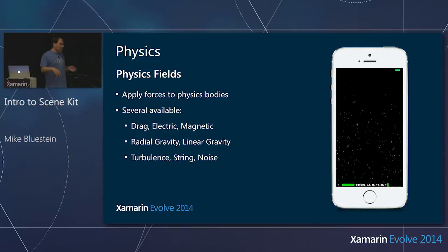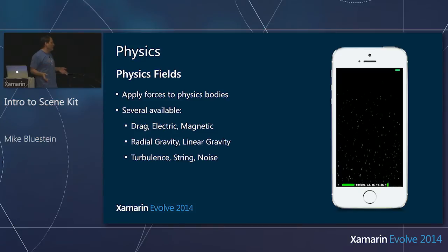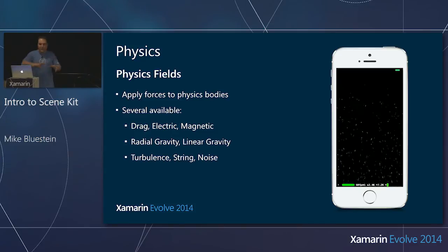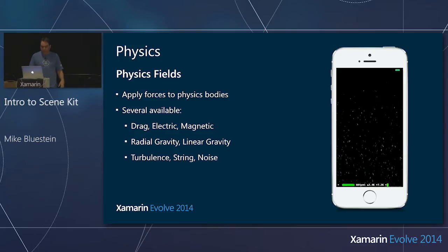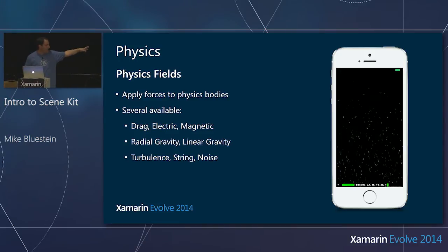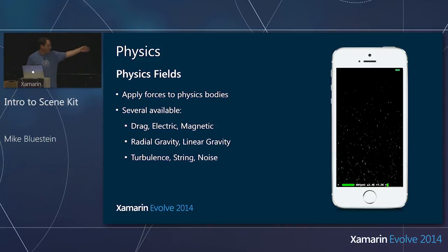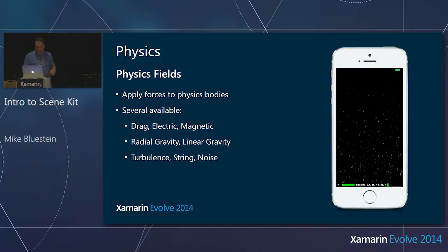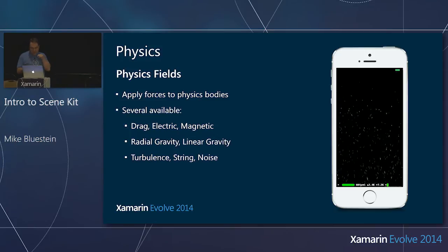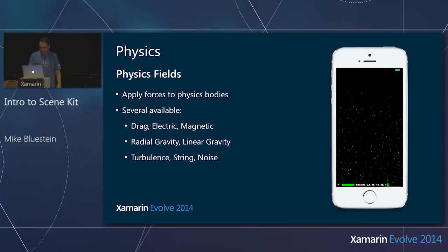A tornado of rain — a few lines of code and there it is. You get these fields out of the box. Noise makes everything go all over. SCN nodes and particle systems are both affected by physics fields. Combining touches, forces, and physics fields, you can create some pretty cool effects.